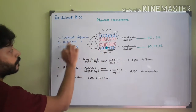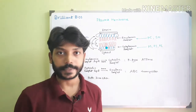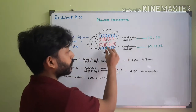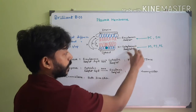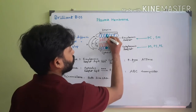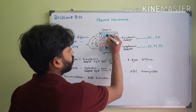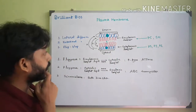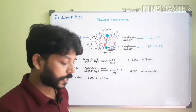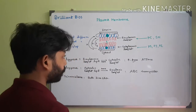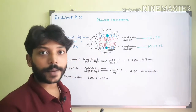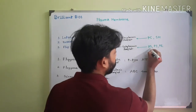Lateral diffusion and rotational diffusion can occur spontaneously, but flip-flop movement does not occur spontaneously. When a cell dies, the phosphatidylserine present in the cytoplasmic leaflet goes to the exoplasmic leaflet. To detect this, there is a protein called annexin-5 that binds with phosphatidylserine, allowing us to check whether apoptosis is occurring in a cell.